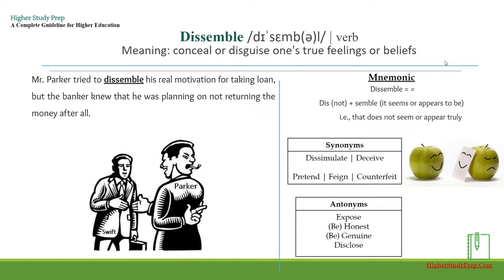The mnemonic for 'dissemble': break it apart as 'dis,' meaning not, and 'semble,' meaning seems or appears to be — so overall it means does not appear truly. Synonyms include: dissimulate, deceive, pretend, feign, or counterfeit.